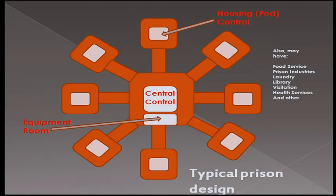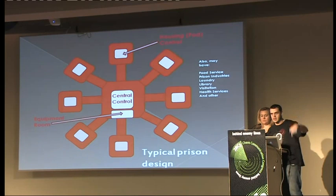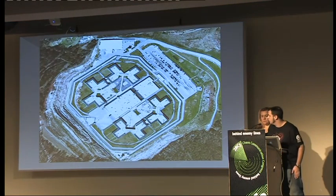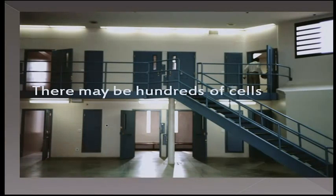This is typically how prisons are laid out: a hub-and-spoke design, where central control is in the middle and all the housing units spawn off of that. In central control, it's also worth taking note that the equipment room — where the PLCs, the servers, etc. — is usually attached to central control. In the facility we went to, it was actually underneath it; you had to go down a hatch through the floor to get down to the rack room. There could be hundreds of cells.